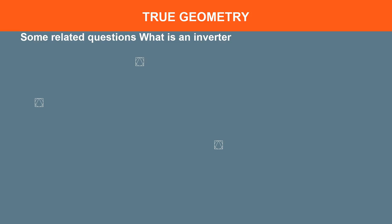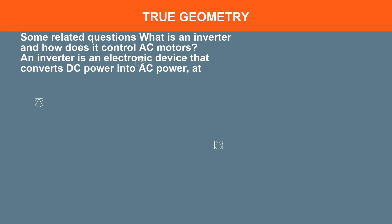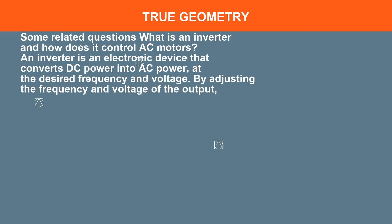Some related questions: What is an inverter and how does it control AC motors? An inverter is an electronic device that converts DC power into AC power at the desired frequency and voltage. By adjusting the frequency and voltage of the output, an inverter can control the speed and torque of an AC motor.